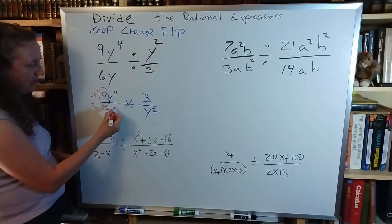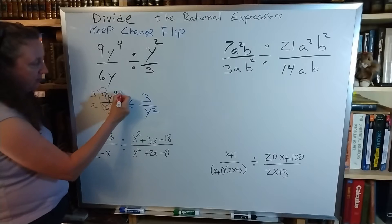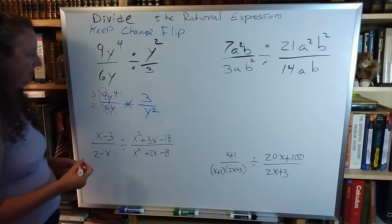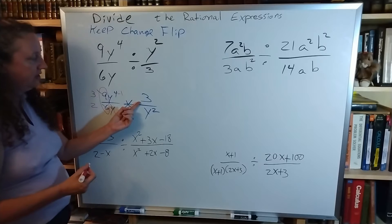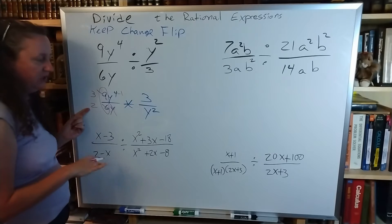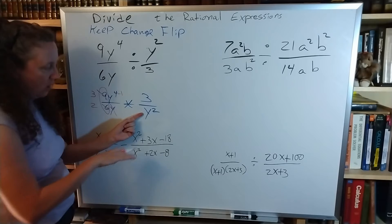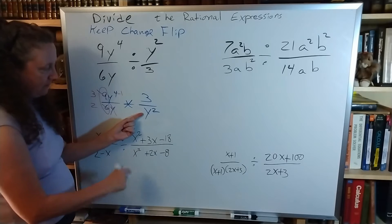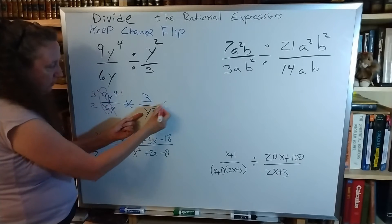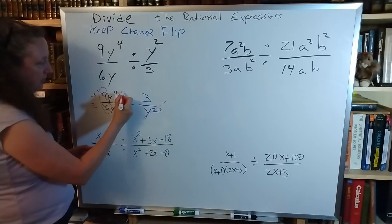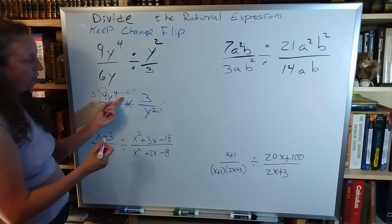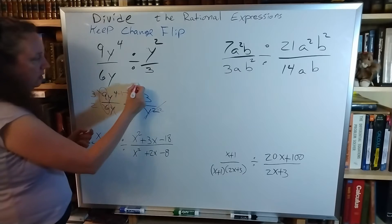I see the y on the bottom here — I'm going to cancel that and subtract 1 from the exponent. I see the 3 on the top and a 2 on the bottom — I can't do anything with that. I see the y on the bottom and this up top — I'm going to subtract the 2 there, which is going to cancel it. Subtract the 2 there, and 4 minus 1 minus 2 is 1.